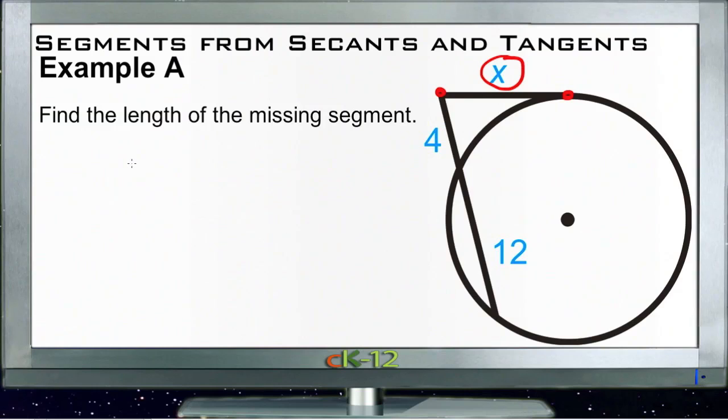x squared, so the short segment squared, is equal to 4 times 4 plus 12. So we have our outside segment, which was our a in our examples, times a plus b, and that's equal to c squared.